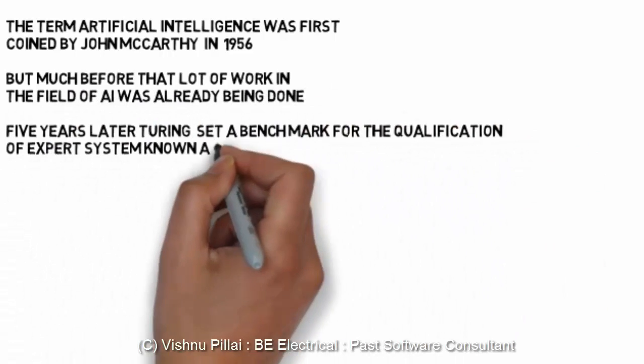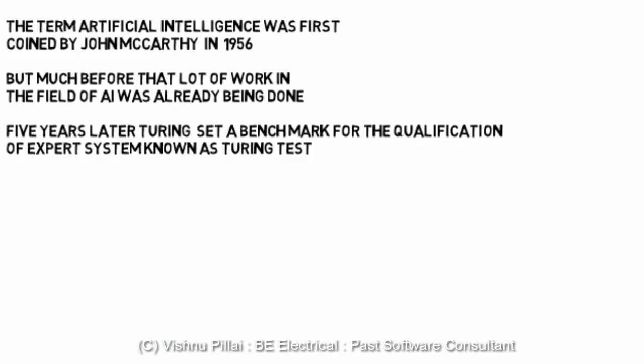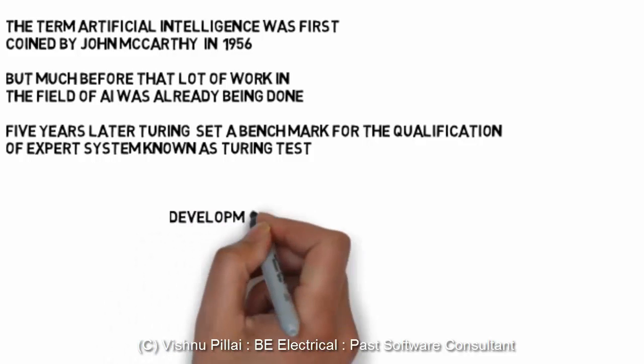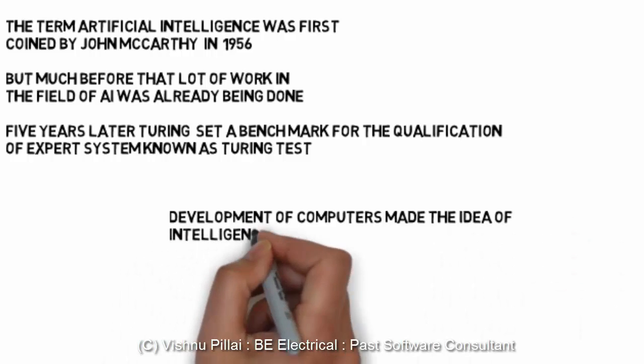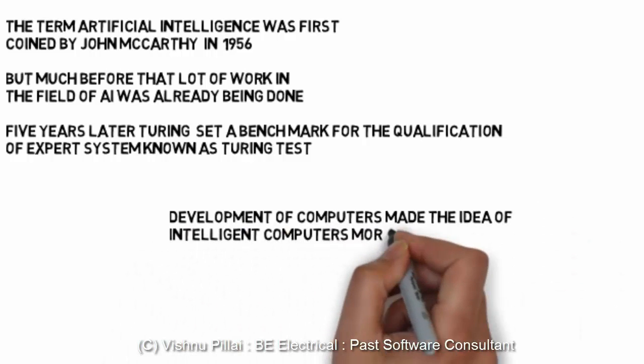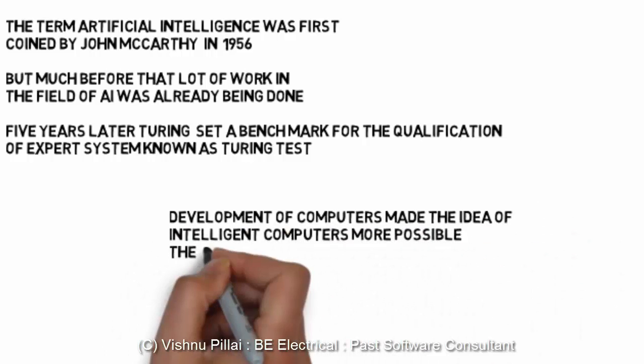Five years earlier, Turing set a benchmark for the qualification of an expert system, known as the Turing test. What Turing did was set a benchmark test for any system to qualify as an expert system, which is still considered a benchmark for the ideal expert system today.